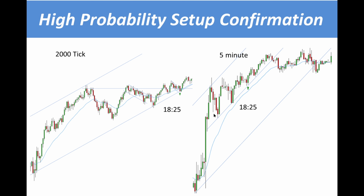There are three main things I look for when analyzing the five minute chart alongside the 2000 tick chart. The first is the most ideal — a high probability setup confirmation. On the left side we have the 2000 tick chart, on the right side we have the five minute chart, and as you can see on the left side price is in a strong uptrend and is above the EMA for the most part.